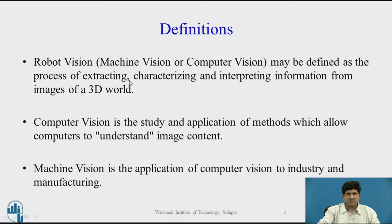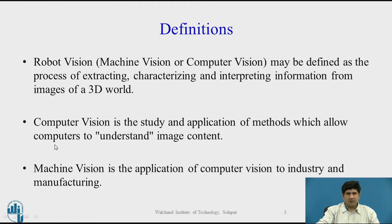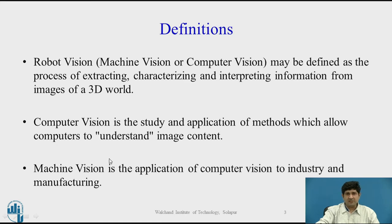Robot vision may be defined as the process of extracting, characterising, and interpreting information from images of a 3D world. This applies to machine vision or computer vision as well. Another definition for computer vision is that it's the study and application of methods which allows a computer to understand the content of an image. Machine vision in particular is the application of computer vision to industry and manufacturing. Robot vision would be a specific subset within machine vision, and machine vision itself would be a subset of computer vision. Robot vision is very specifically the application of computer vision for robot control tasks, either with industrial jointed arm manipulators or with mobile robots.